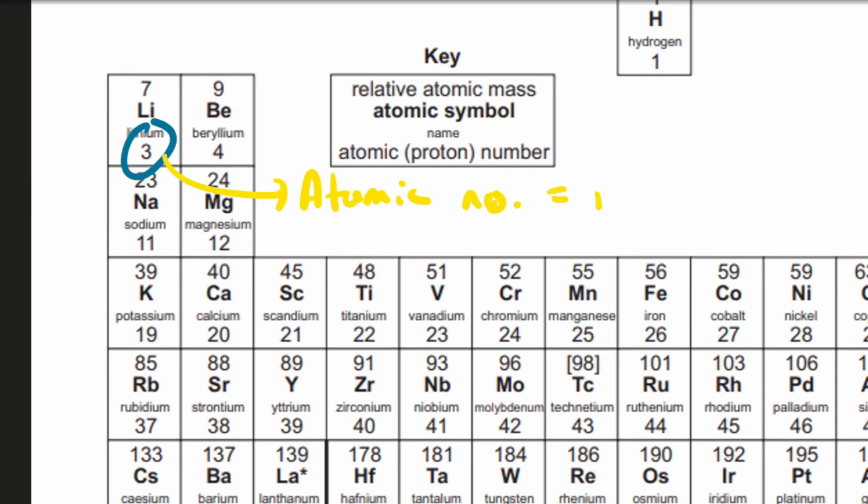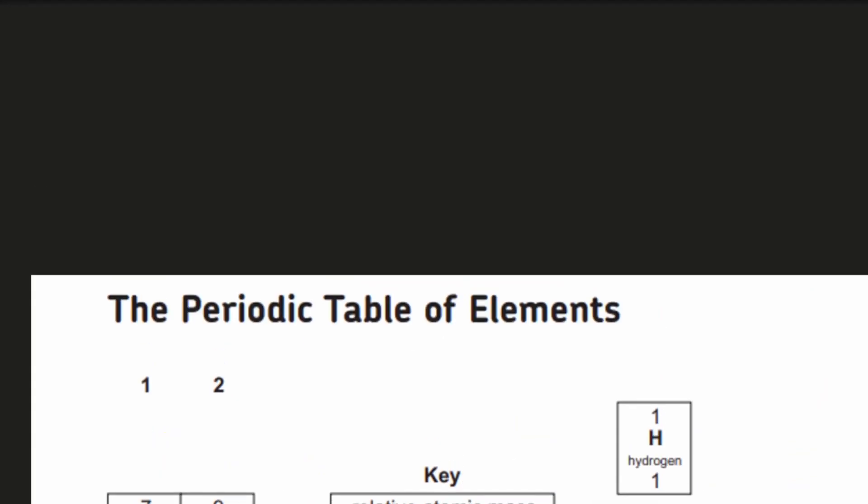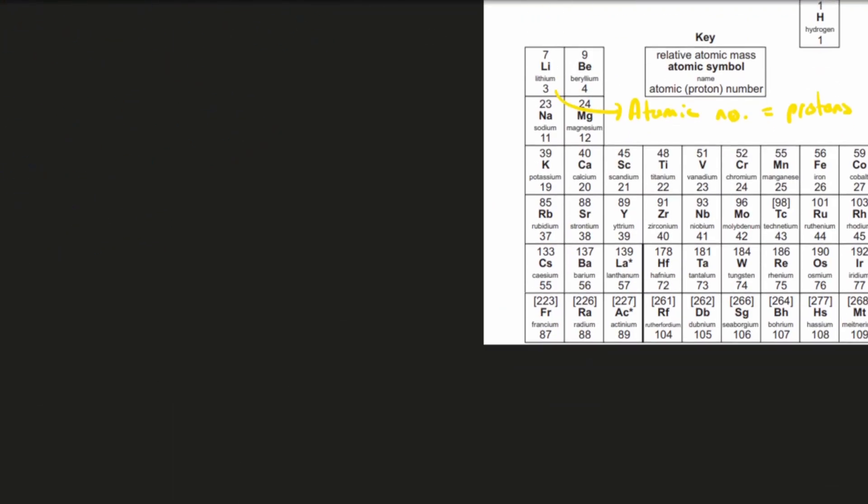This is equal to the number of protons in the nucleus. So any element with three protons is called lithium. We called Element A anything with four protons, so in the periodic table, the element with four protons is beryllium.